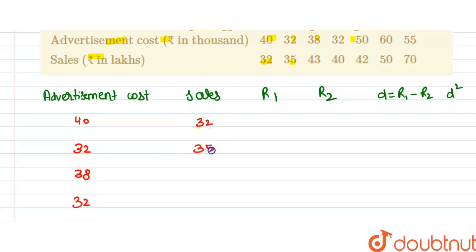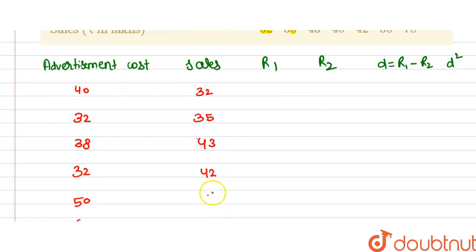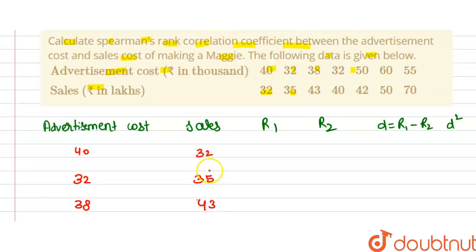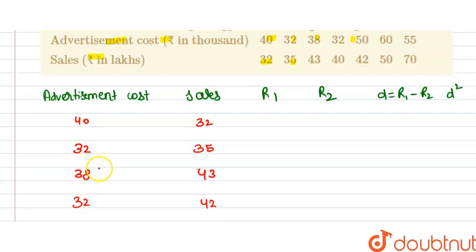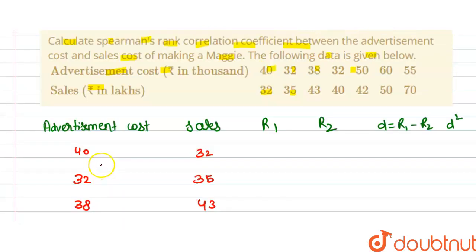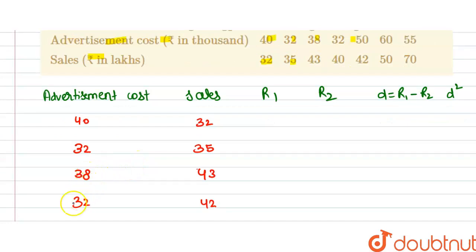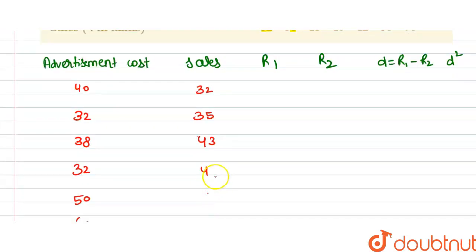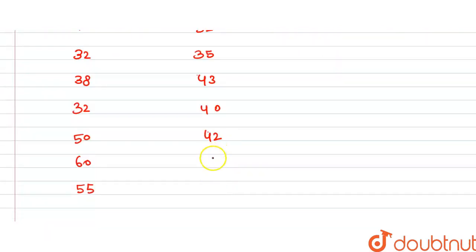The sales values are: 32, 35, 43, 40, 42, 50, and 70. The advertisement cost column reads: 40, 32, 38, 32, 50, 60, and 55. The sales column reads: 32, 35, 43, 40, 42, 50, and 70.